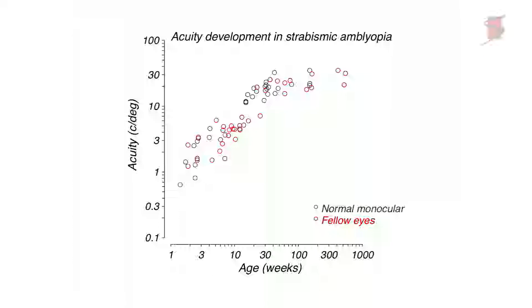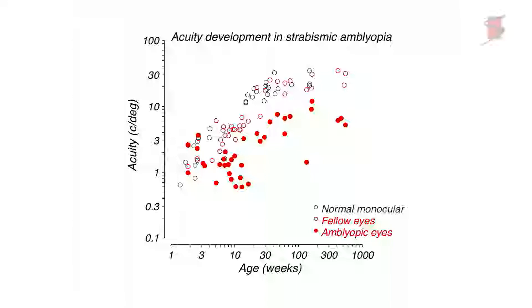Looking at a group of animals — some made strabismic at an early age and some not — the fellow eyes tracked normally with typical animals. The amblyopic eyes showed a setback in the developmental profile, but not an arrest of development. Development continued, just more slowly and perhaps over a longer time course. Out to two years, the difference between the eyes persists — and that's the characteristic of amblyopia, what you would see in a child as an adult.